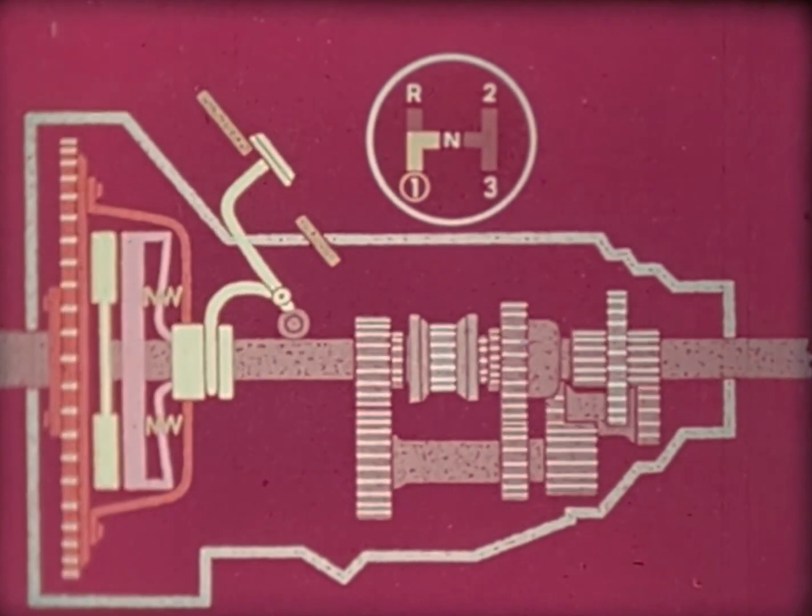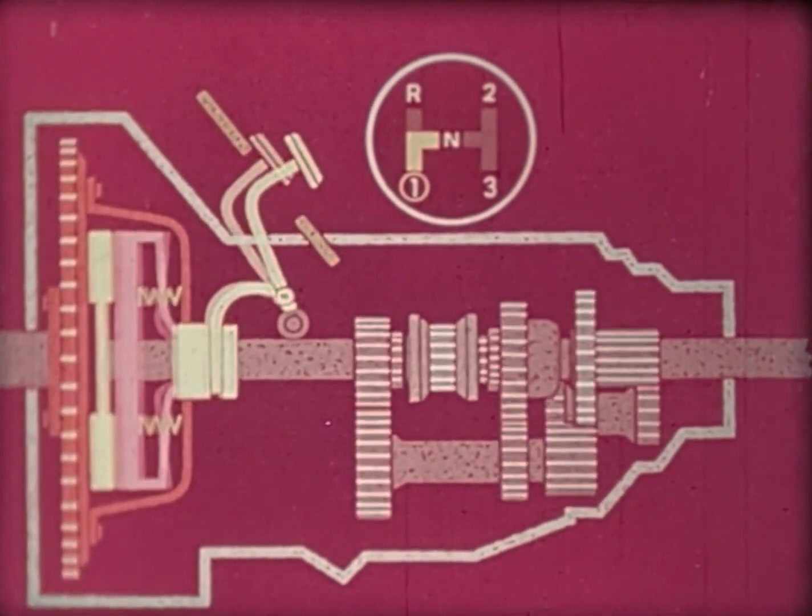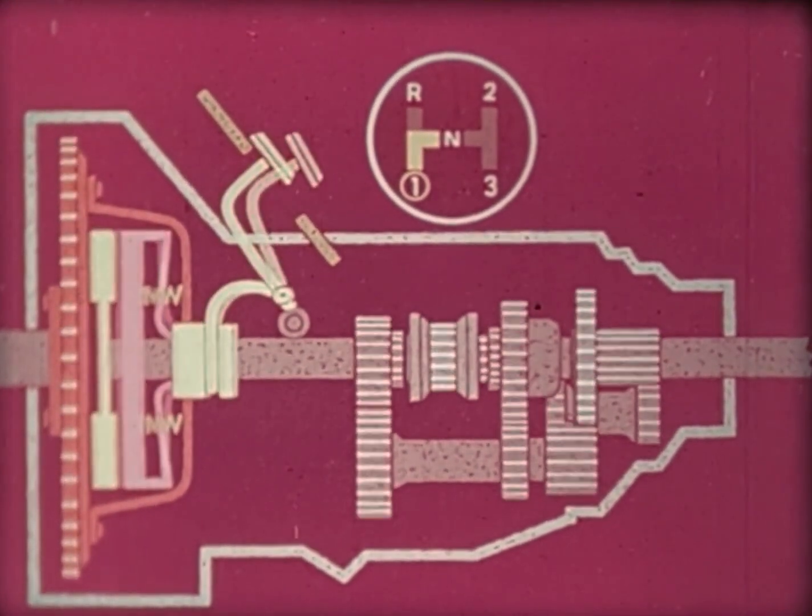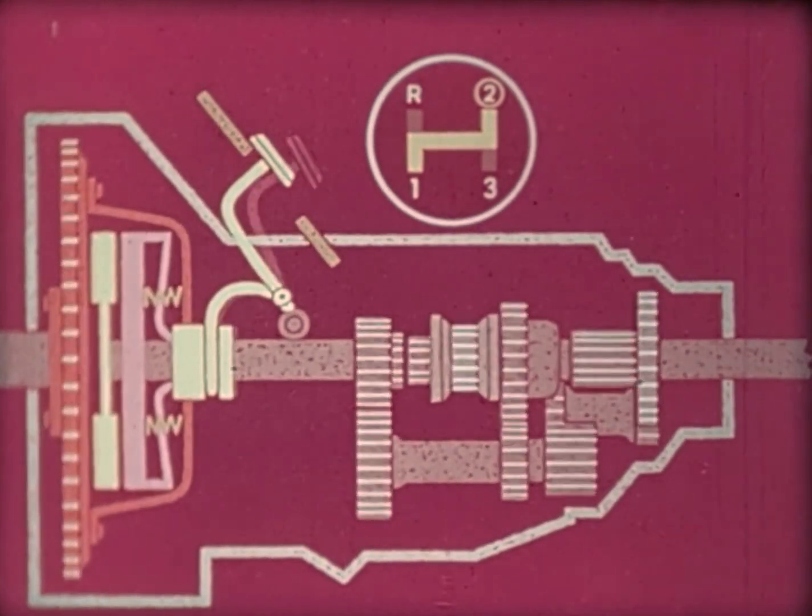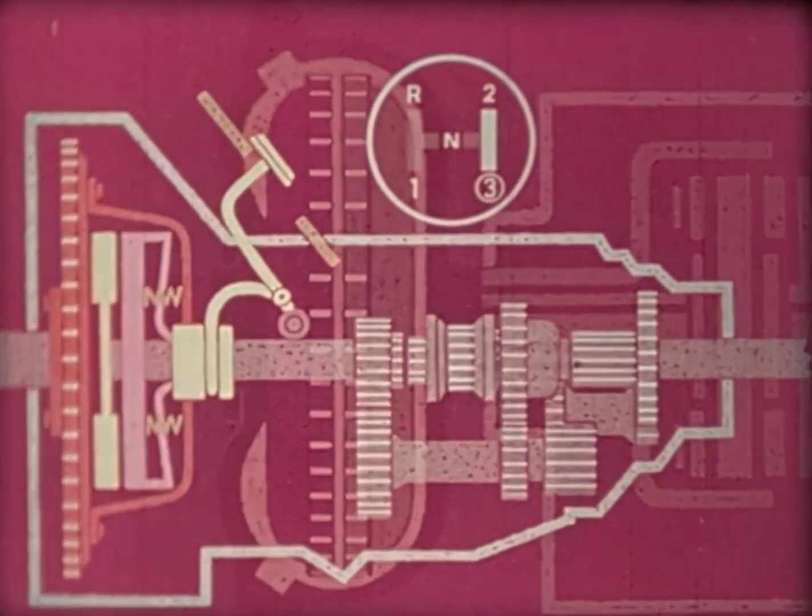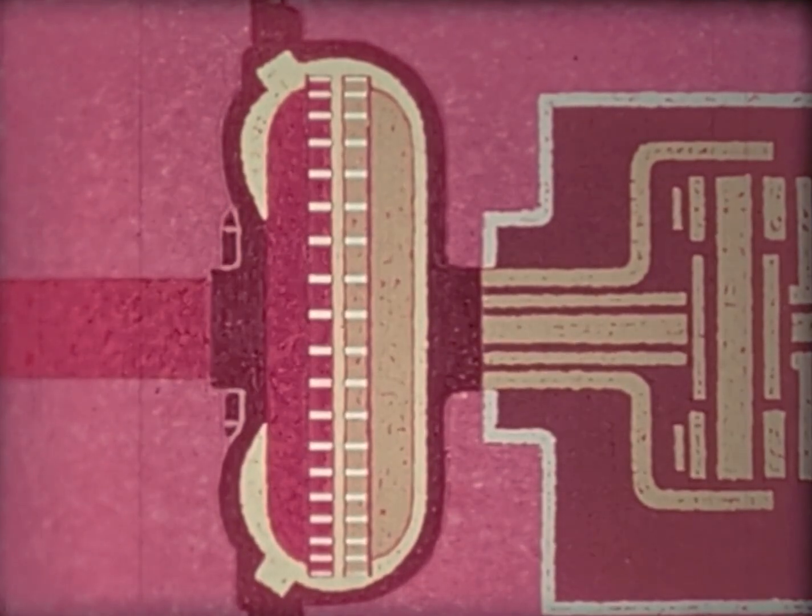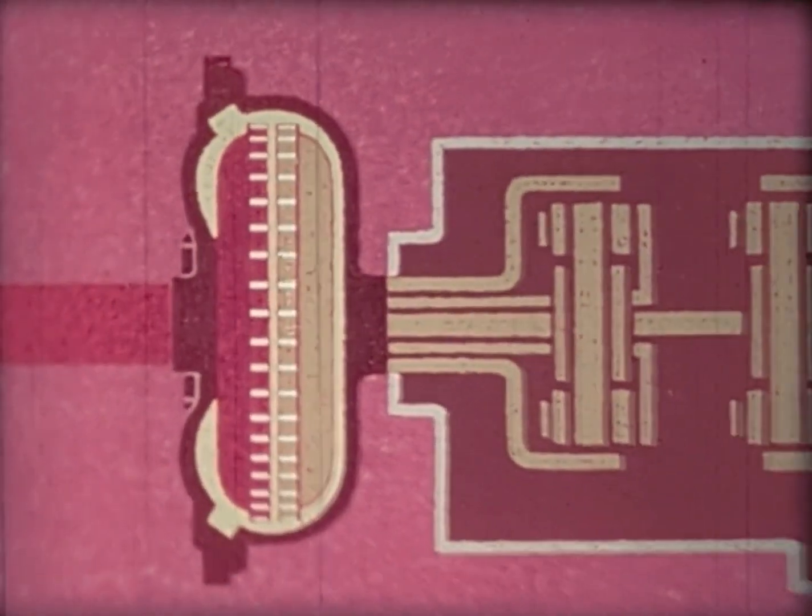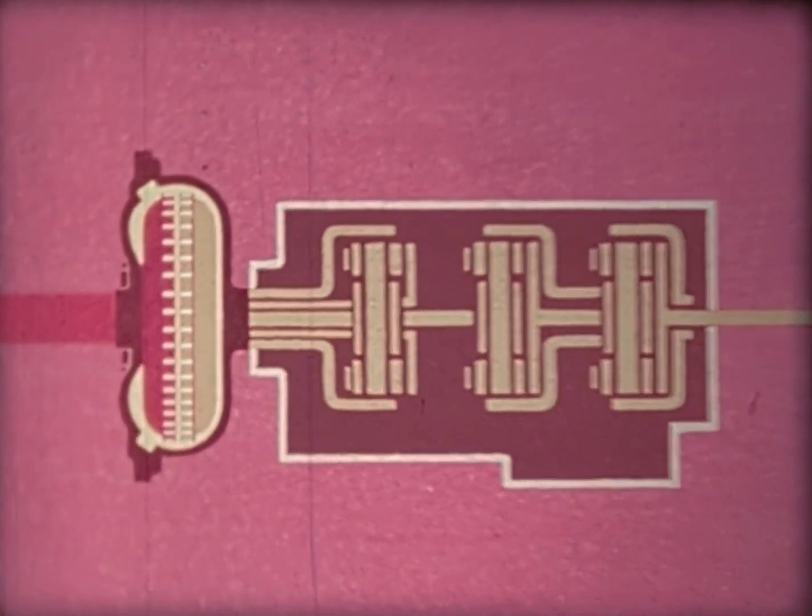The clutch works with the transmission. It is always disengaged when the gears are shifted so there won't be any strain on them. An automatic transmission uses a hydraulic clutch and a set of planetary gears.